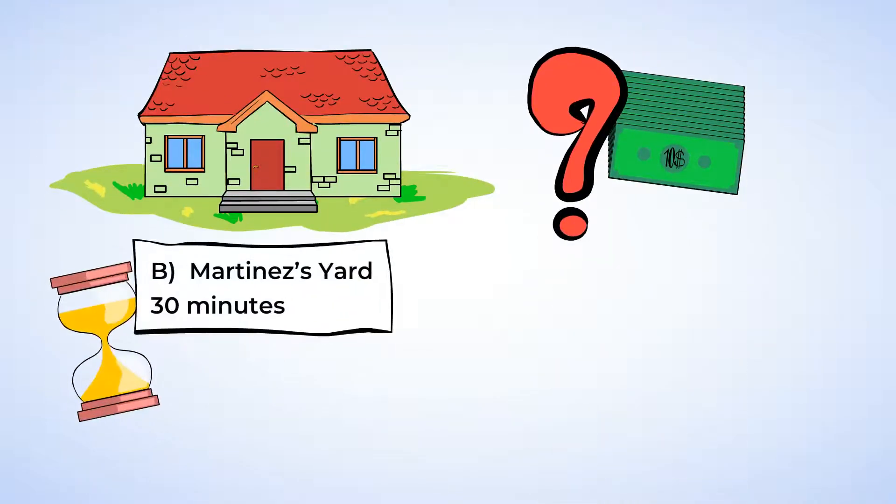Next up is the Martinez's yard. It took Chen 30 minutes to mow their yard. And 30 minutes is half an hour. That means he will charge only half of his hourly rate. And half of eight is four. So Chen earns $4 from the Martinez's yard.